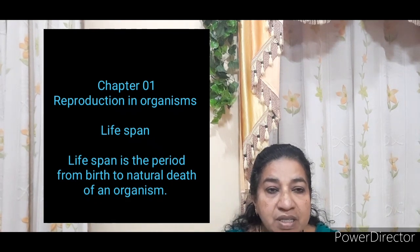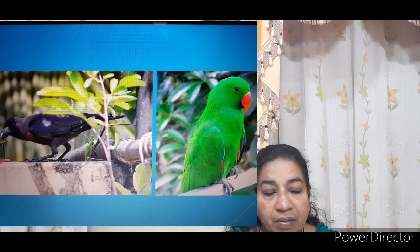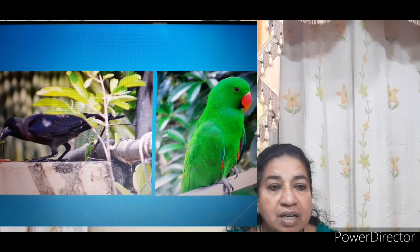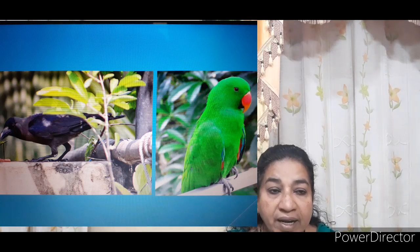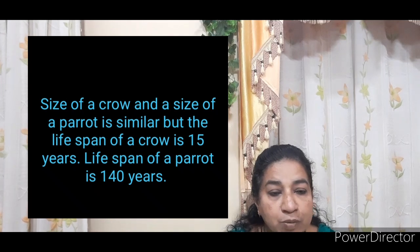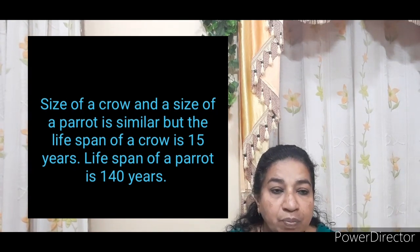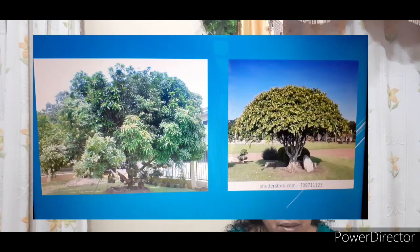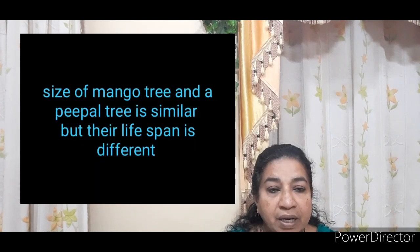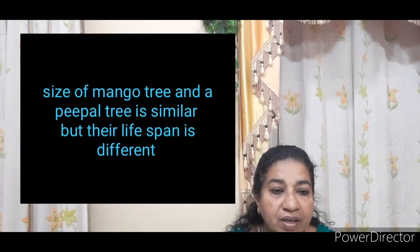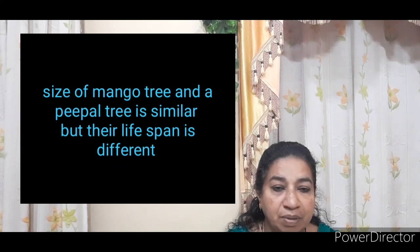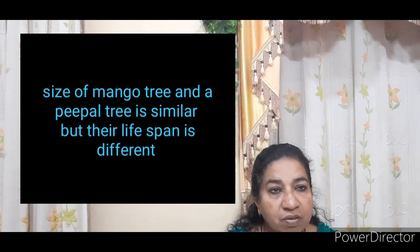Lifespan of organisms is not connected with their size or shape. For example, the size of a crow and the size of a parrot are almost similar, but their lifespan shows a wide difference. The lifespan of a crow is 15 years, while the lifespan of a parrot is 140 years. Similarly, a mango tree has a lifespan below 100 years, but a peepal tree has a lifespan of more than 250 years — the size and shape are similar, but the lifespan shows a wide difference.